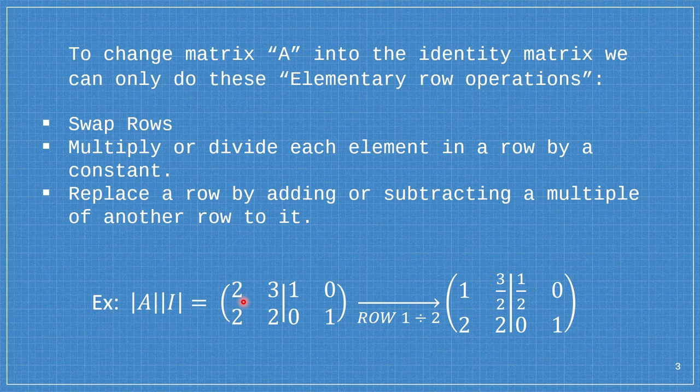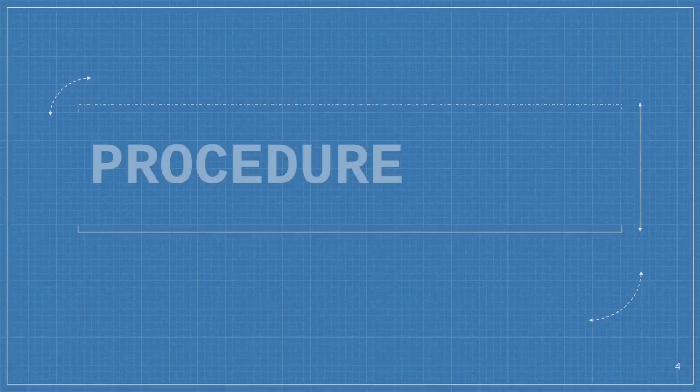For example, since I'm going to make this 1, I have to divide it by 2. So I'm going to divide the whole row 1 by 2, and that would give us 1, 3 over 2, 1 half, and then 0.